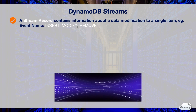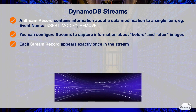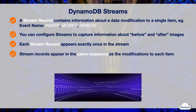These event names indicate Put Item, Update Item, or Delete Item respectively. You can configure streams to capture additional information of the modified items, such as the before and after images. DynamoDB guarantees that each stream record appears exactly once in the stream for each item that is modified in the table, and stream records appear in the same sequence as the modifications.